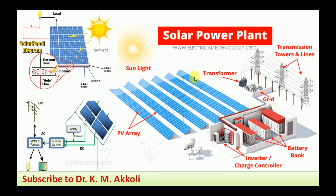Firstly, the solar photovoltaic power plant. The solar photovoltaic power plant uses solar photovoltaic cells. These solar photovoltaic cells consist of semiconductor silicon materials. The semiconductor silicon material has one layer called the N-type layer and another one called the P-type layer, and these are separated by a junction.